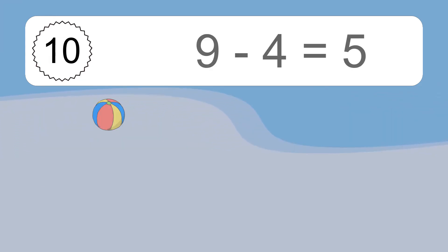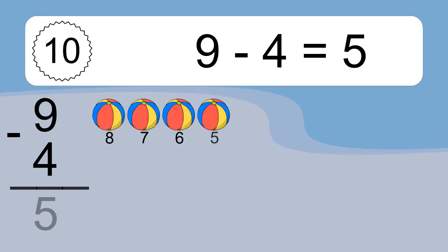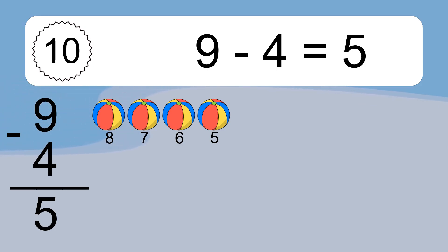9 minus 4 equals what? 9 minus 4 equals 5. Let's count it: 8, 7, 6, 5.